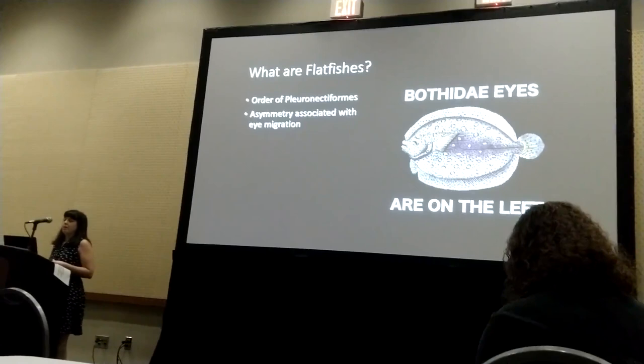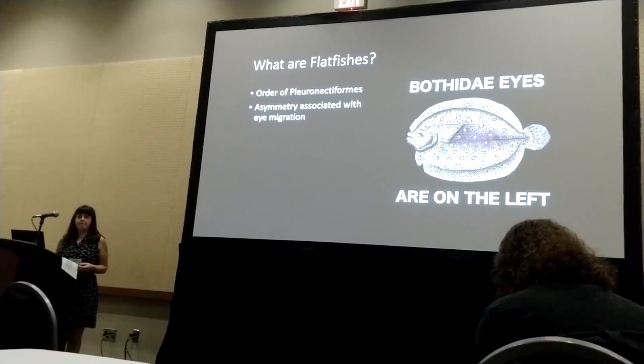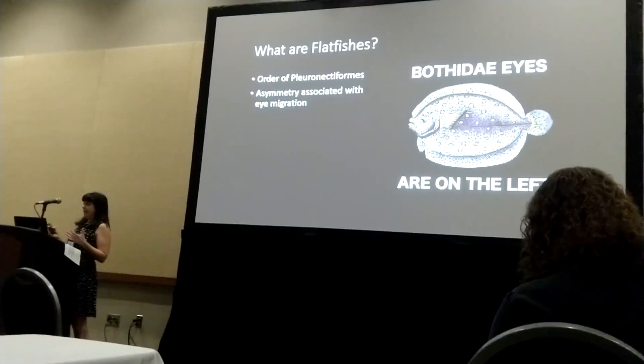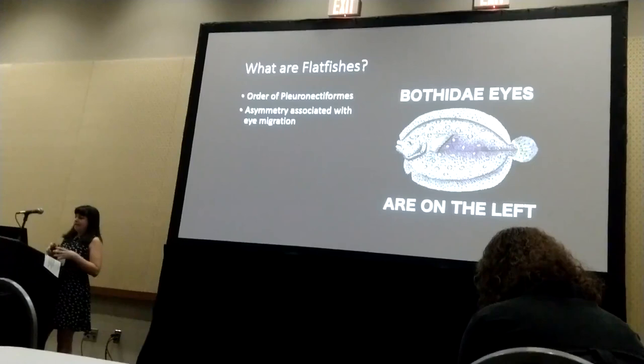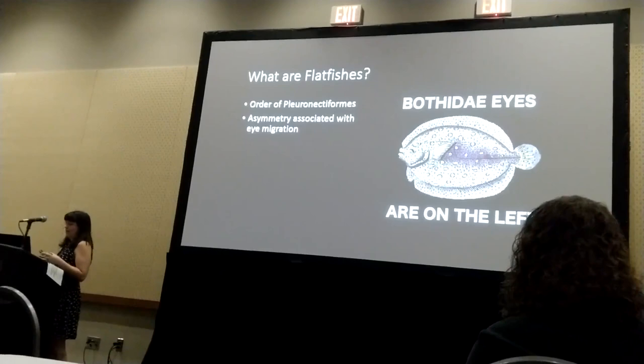To begin with, I want to give you a little bit of background on the group of fishes that I worked on. I worked on the flatfishes, and these are found in the Order Pleuronectiformes. This order is very big — there are 14 families — and they're all united by this asymmetry that's associated with eye migration. This asymmetry has historically been used to group together different families of flatfishes.